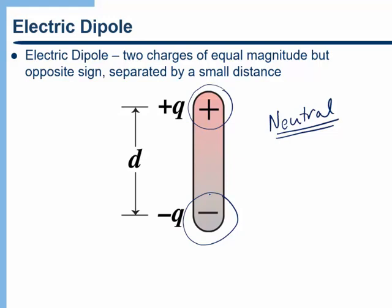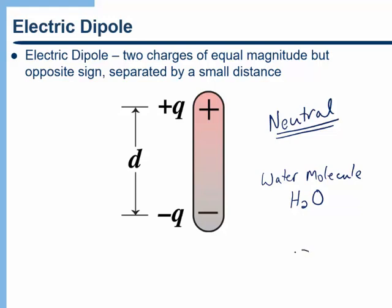Electric dipoles are really important in physics and chemistry. For example, a water molecule (H₂O) is an electric dipole because the oxygen side and the hydrogen side do not share electrons equally. The oxygen side hogs the electrons, so one side of the water molecule is more negative and the other more positive.